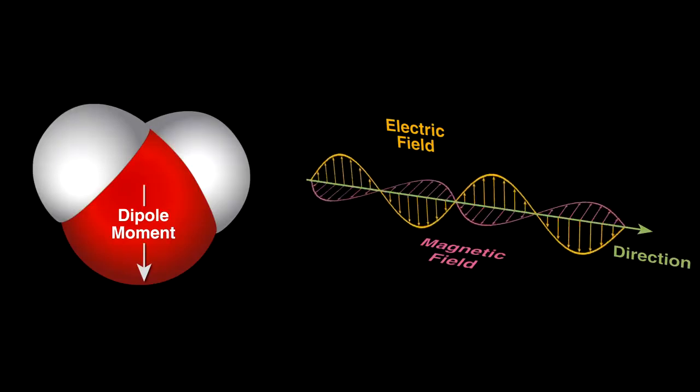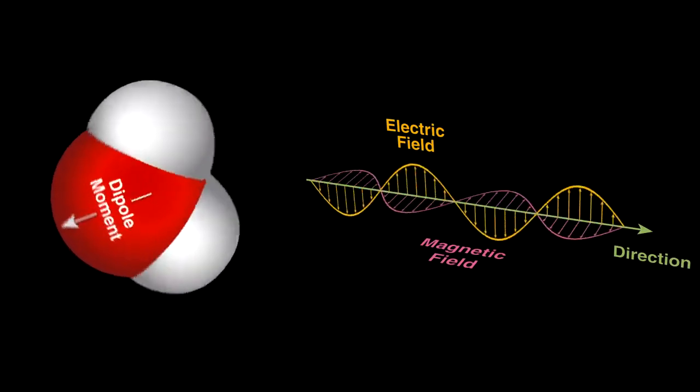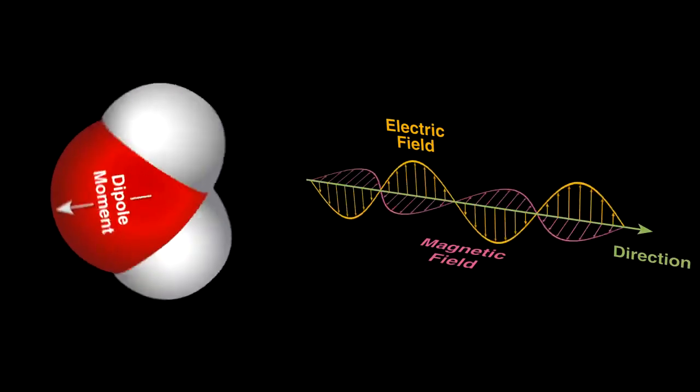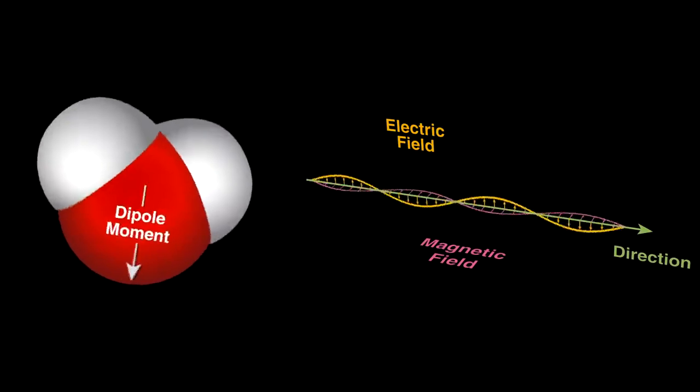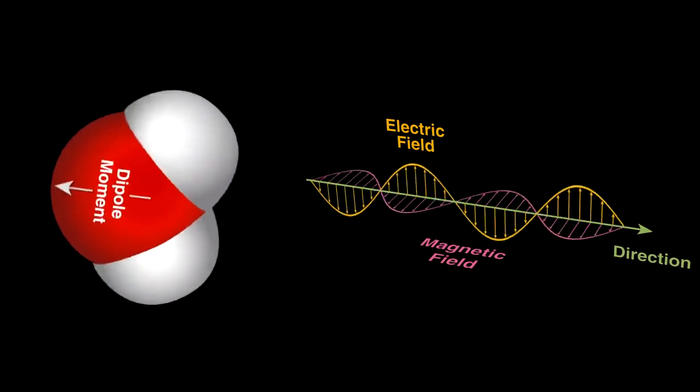Water will try to align with the radiation's electric field. The changing field rocks the water molecules back and forth rapidly, and molecular friction from this creates heat as the motion disrupts the hydrogen bonds between neighboring water molecules.